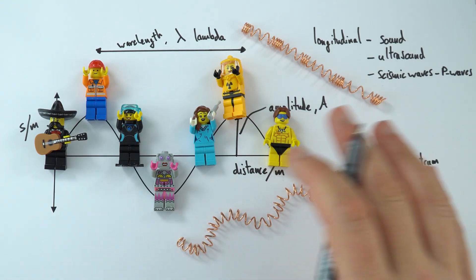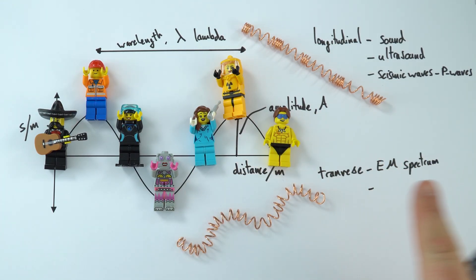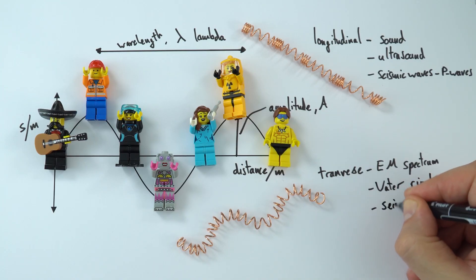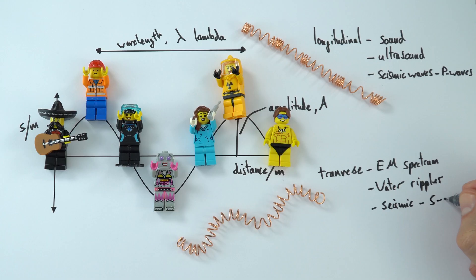We also have, effectively, the ripples in water are like transverse waves because as the ripples move along, things on top of the water just move up and down. So we can also have water ripples. And also there are some seismic waves that are produced underground. And this is what we call our secondary waves, shortened to S waves.